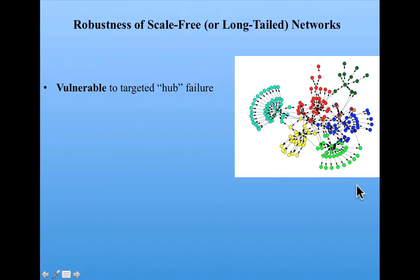An example of this is on the web, where highly-connected websites are targeted by malicious people via attacks called distributed denial-of-service attacks. If my webpage goes down, nobody's really going to get upset because it doesn't have a lot of links coming into it. Whereas if a big website like Yahoo goes down — a very highly-connected website — that's going to cause a lot more havoc on the web.